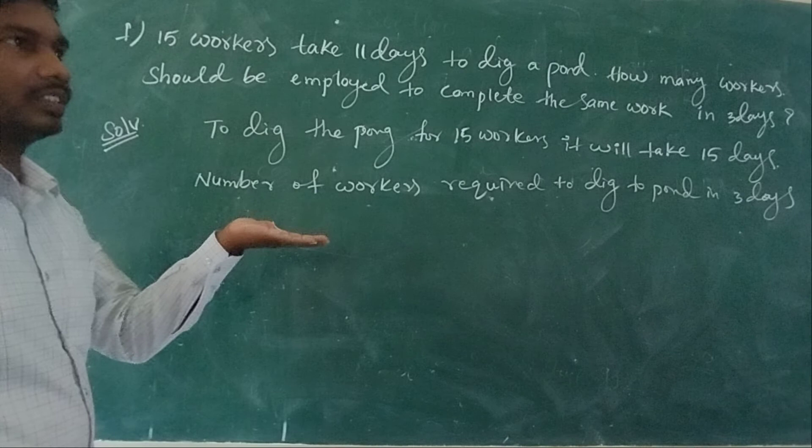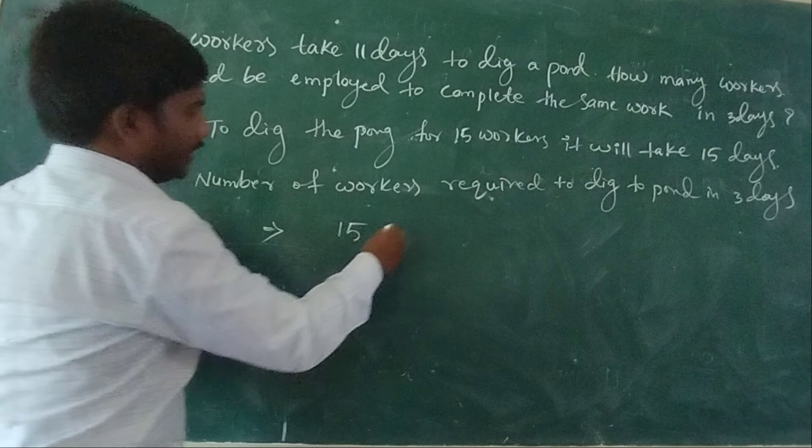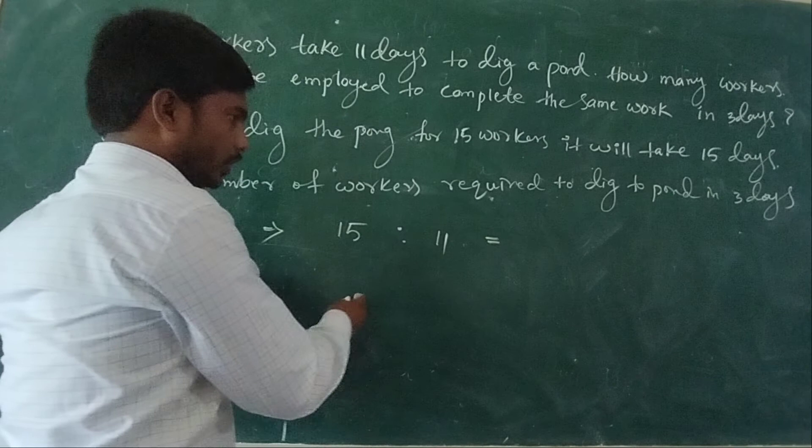When the number of persons or workers increases, the number of days automatically decreases. That is why this is also indirect variation. Number of workers: 15, number of days: 11.